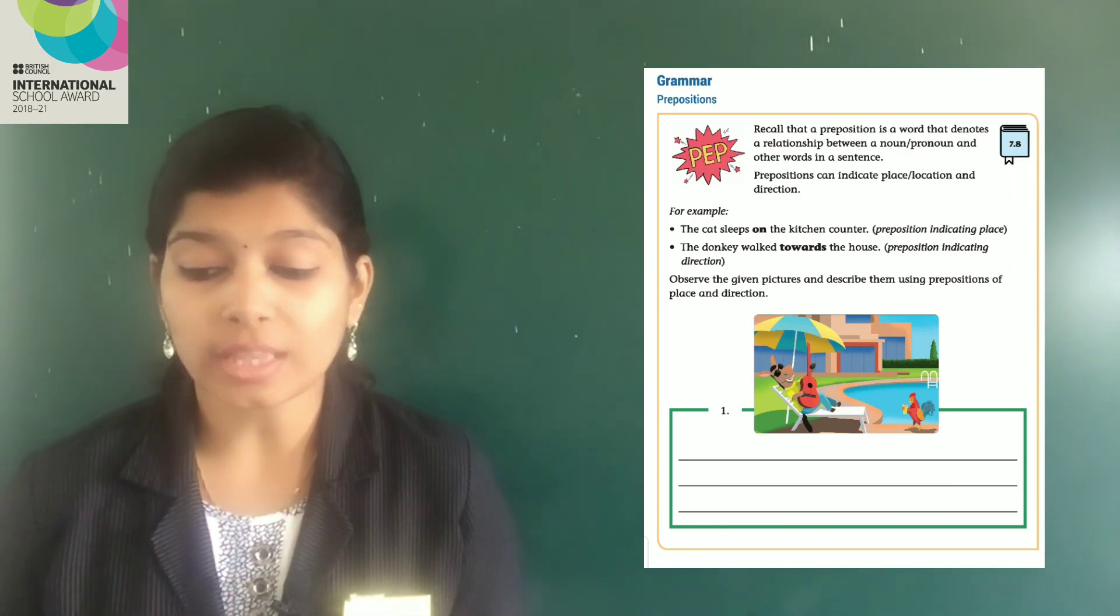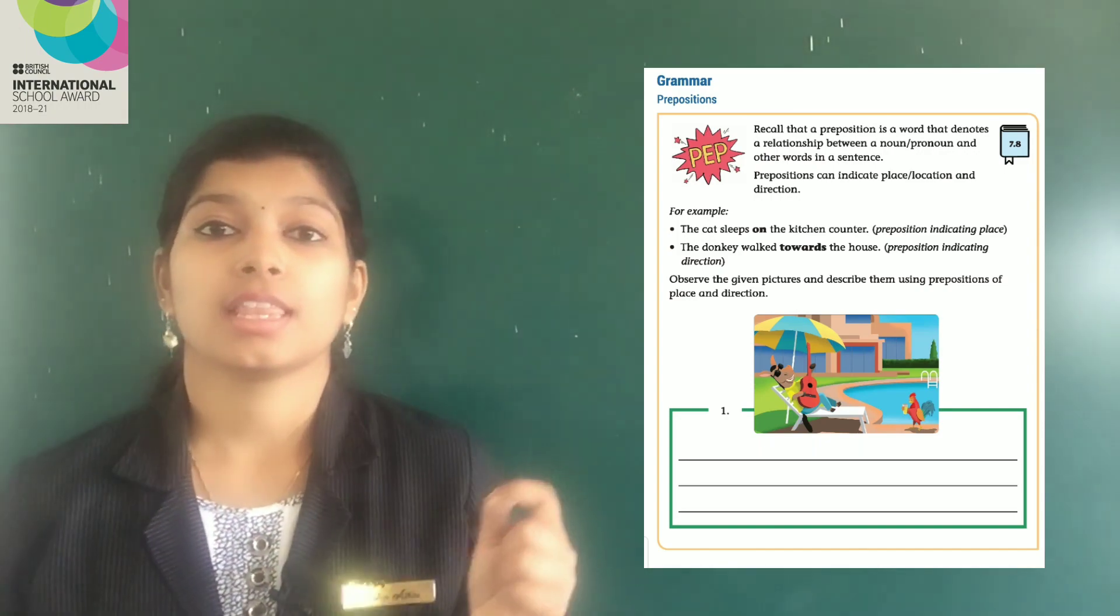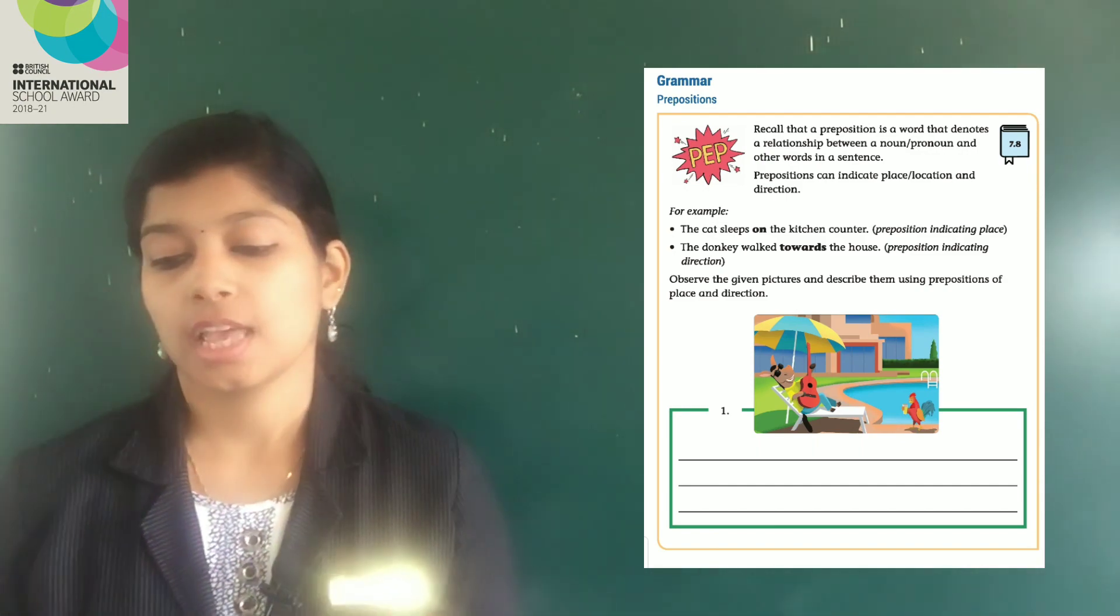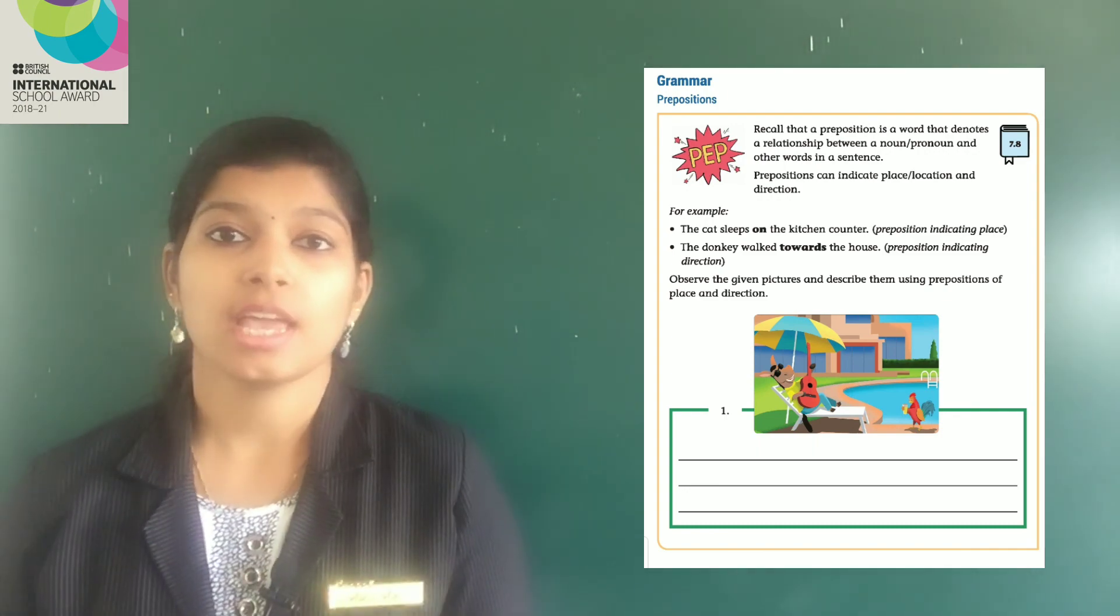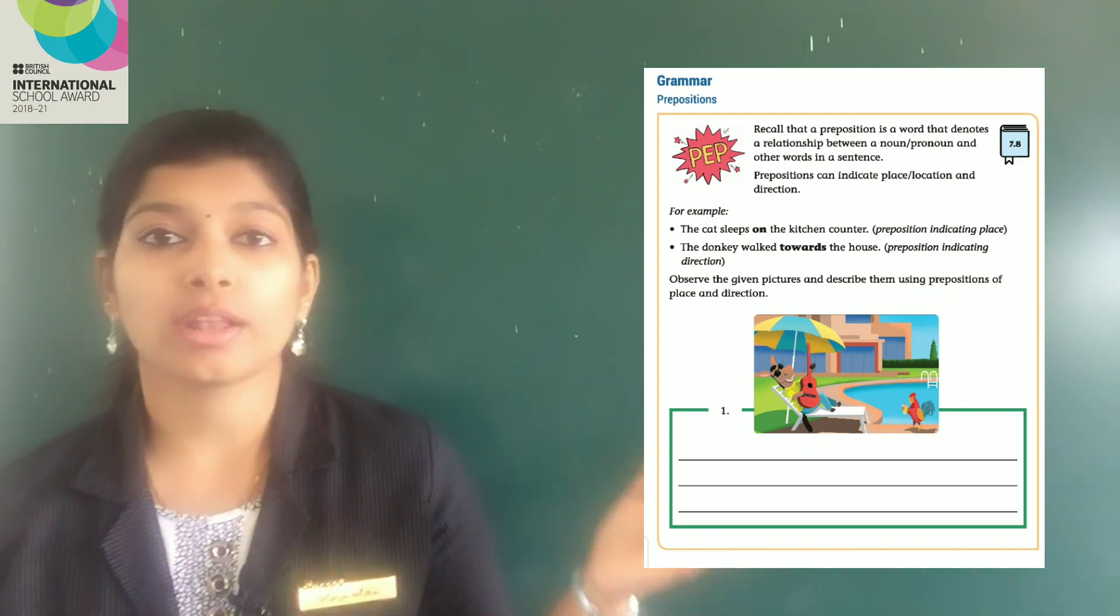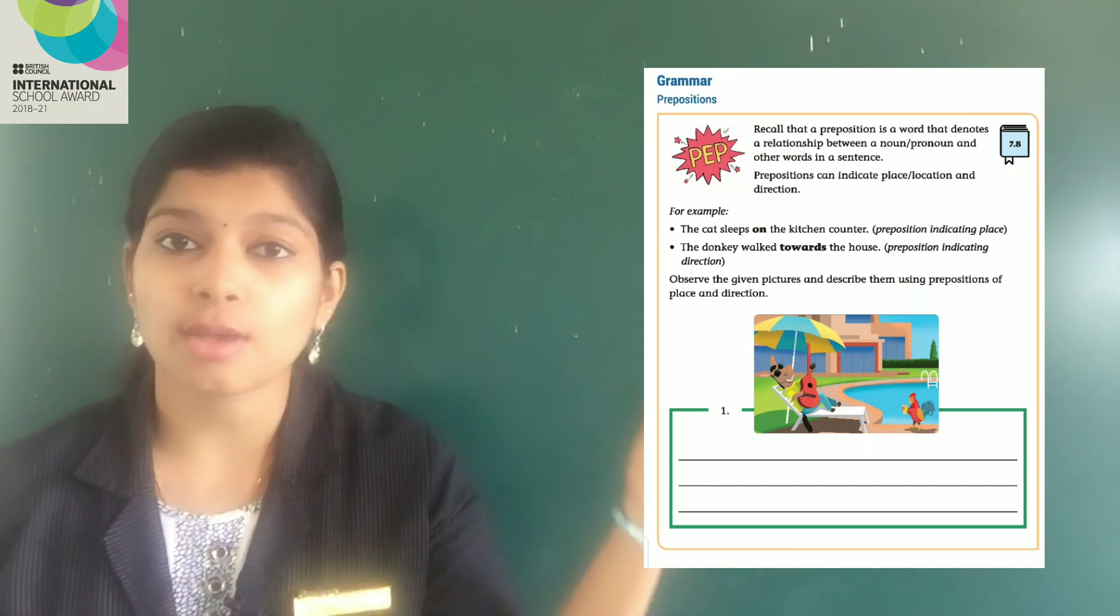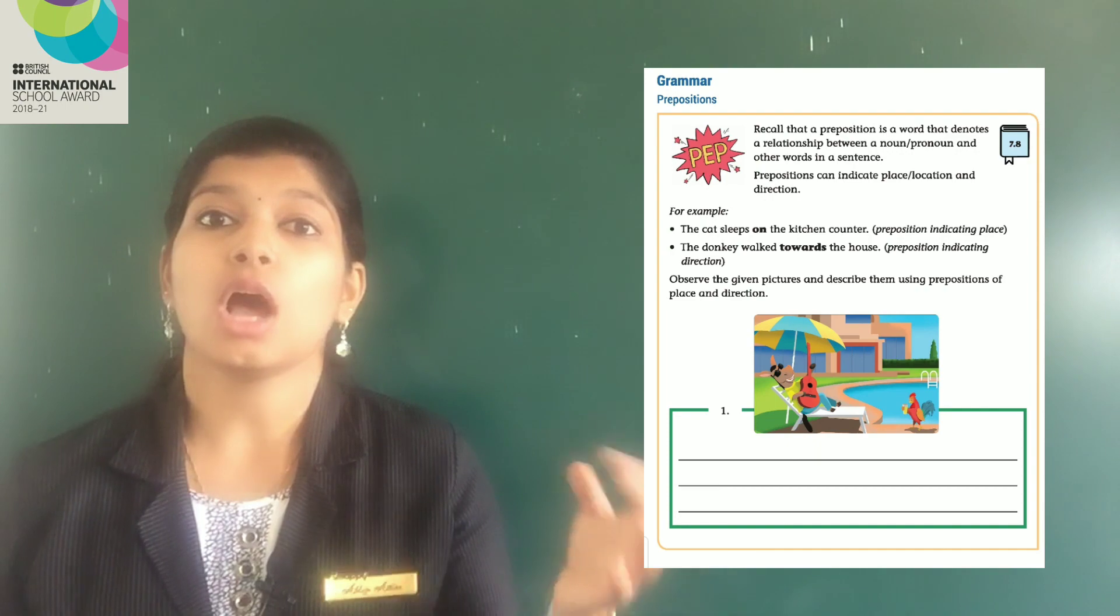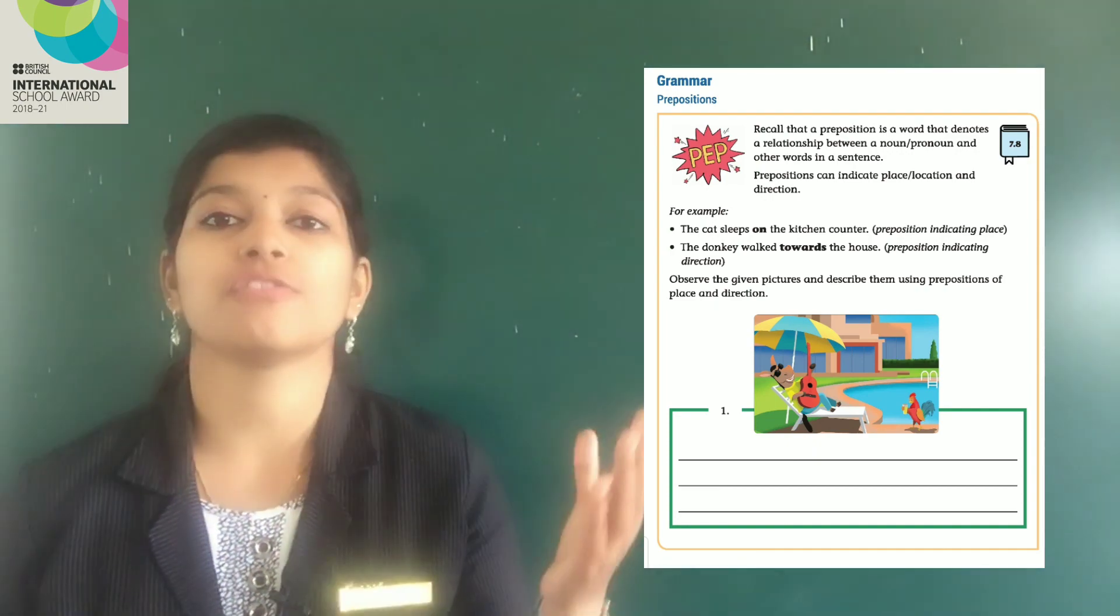the cat sleeps on the kitchen counter. The word given in the dark bold letter is the preposition. 'On' is the preposition indicating place. Why? Because the cat is on the table. If you are asking where is the cat, I am saying the cat is on the table. It is denoting place, indicating where the cat is. So it is a preposition of place.